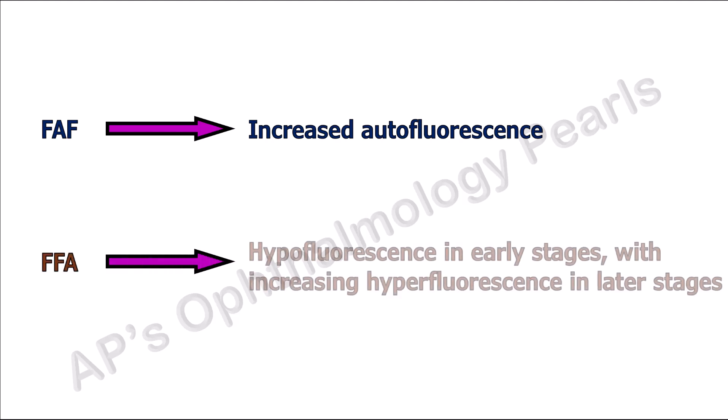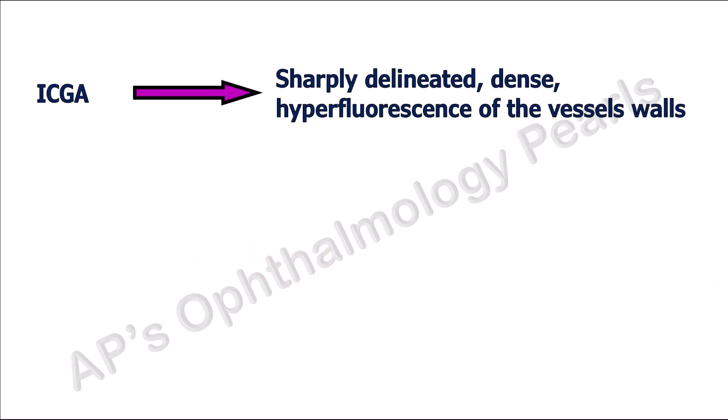Fundus fluorescein angiography shows the pathology to be confined to the vessels, with hypofluorescence in the early stages and increasing hyperfluorescence in later stages, and absence of leakage. This is in contrast to vascular sheathing and frosted branch angiitis, where there is involvement extending outside the vessel walls with extensive leakage.